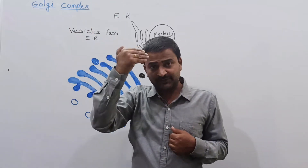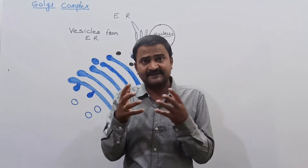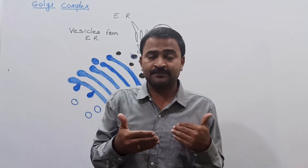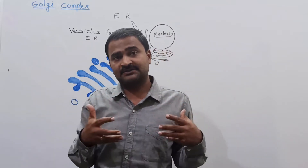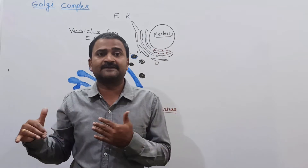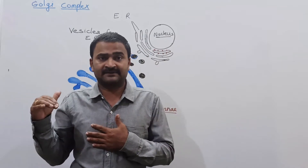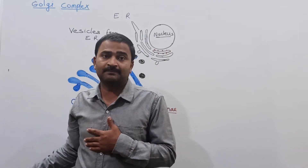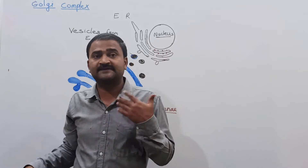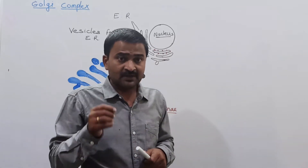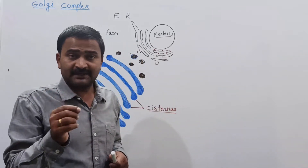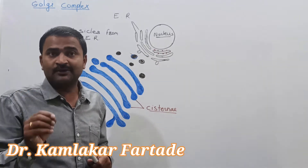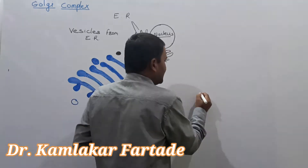The Golgi complex is the second component of the endomembrane system and plays a role in the coordination of cellular functions. The Golgi complex was first observed by Camilo Golgi.